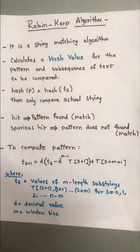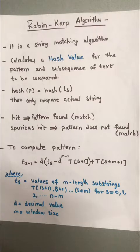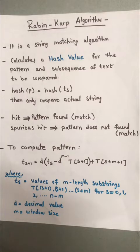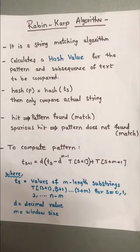To compute the rolling hash, the formula is: T(s+1) = D * (T(s) - D^(M-1) * T(s+1)) + T(s+M+1), where T(s) is the value of the current substring, D is the decimal value (the base), and M is the window size.